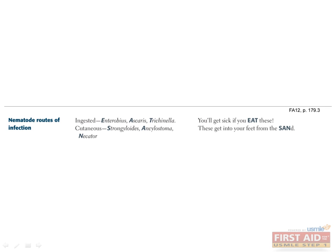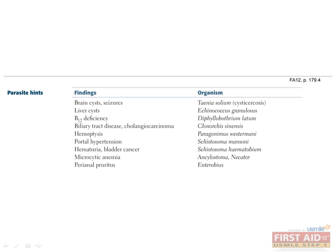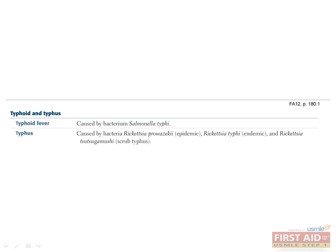Now that we've finished going over the worms, here are two mnemonics to remember how nematodes enter the body. Enterobius, Ascaris, and Trichinella are all ingested and form the word EAT. Strongyloides, Ancylostoma, and Necator all enter by penetrating through the skin — usually through the feet — and form the first three letters of the word SAND. We've also highlighted buzzwords for each worm for quick reference. Finally, remember not to confuse typhoid fever and typhus: typhoid is caused by Salmonella typhi, and typhus is caused by Rickettsia species.